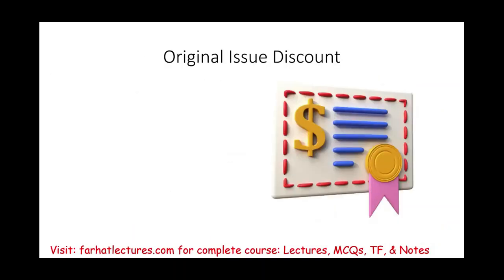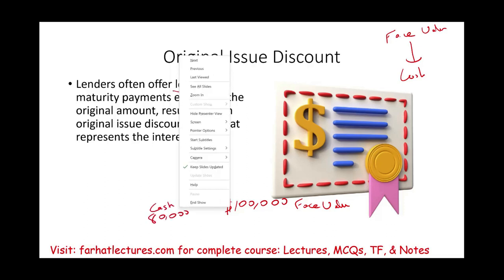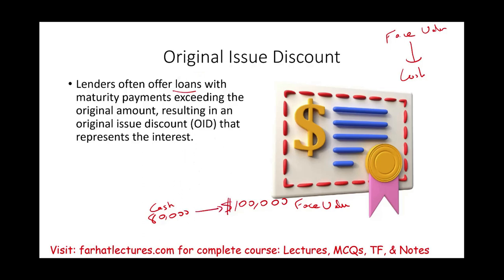Now let's talk about Original Issue Discount bonds. A discount is the difference between the face value of a note and how much cash you received or paid up front. Lenders often offer loans with a maturity payment exceeding the original amount, resulting in what we call Original Issue Discount. For example, if you want to borrow $100,000 from the bank, they might give you $80,000 in cash today but require you to pay back $100,000. This is called a discount loan — you get $80,000 today and pay $100,000 later.